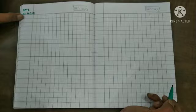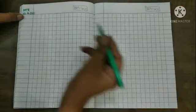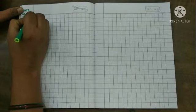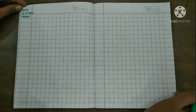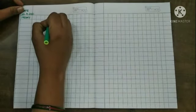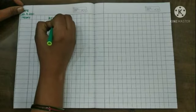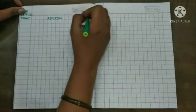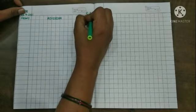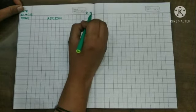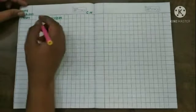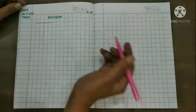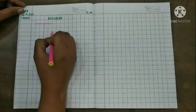And below the date we mention here today's day. What is day today? Today's Friday, F-R-I-D-A-Y, Friday. And in the middle of the page we write revision, R-E-V-I-S-I-O-N, revision. And the right side of the page we write C.W. C is for class and W is for work.